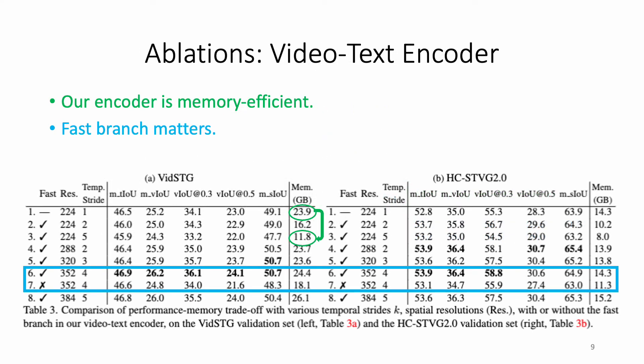Then, we demonstrate the benefits of our video-text encoder in terms of performance-memory trade-off. In particular, increasing the temporal stride in our encoder enables us to train using higher spatial resolutions at a given GPU memory cost, for instance, 352 pixels with stride 4 instead of 224 pixels with stride 1.